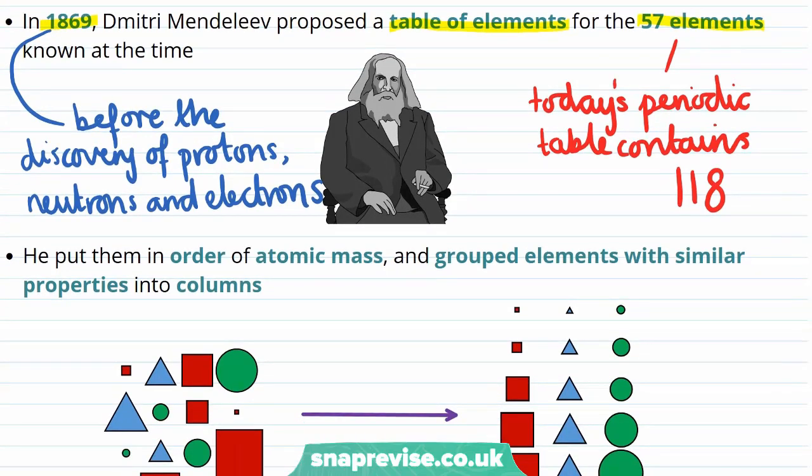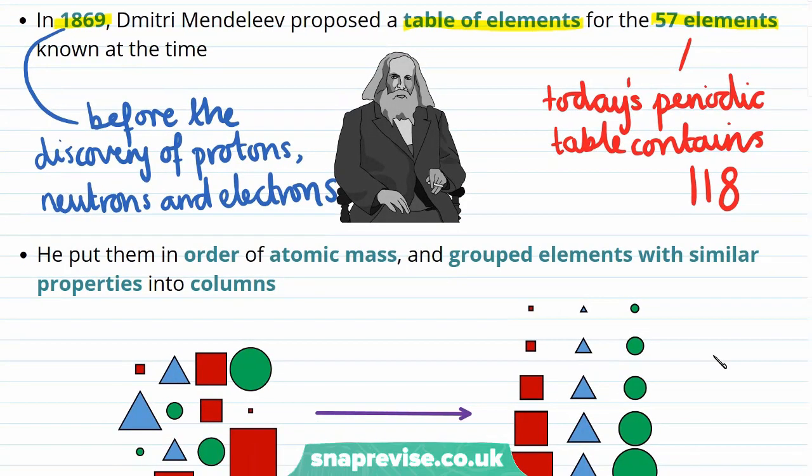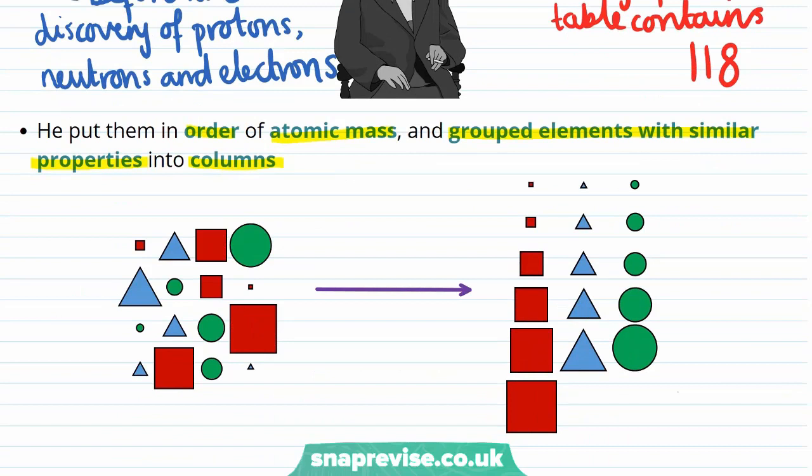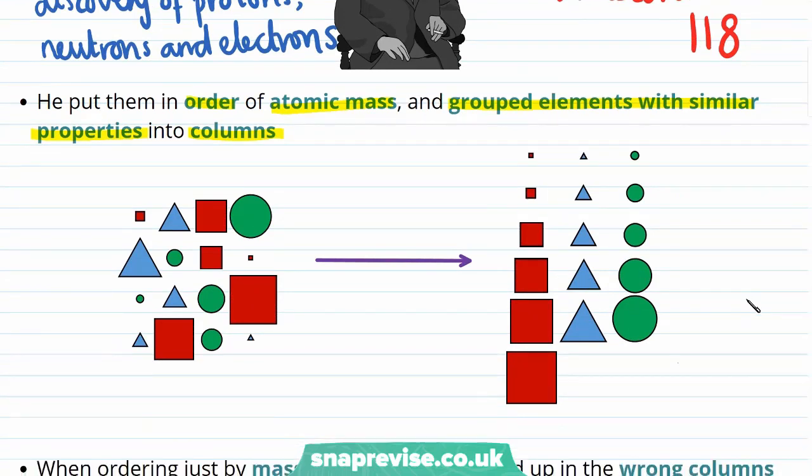Mendeleev did note the relative mass of the atoms of these 57 elements, and could therefore order them in terms of this atomic mass. In addition to this, he grouped elements with similar properties together into columns. These properties were properties of the elements themselves, also the properties of the compounds that they had been observed to form.